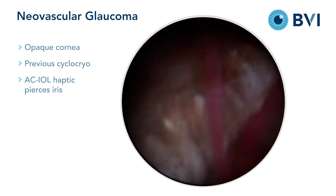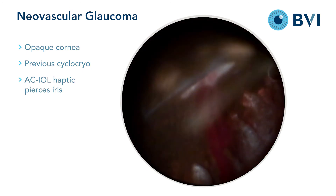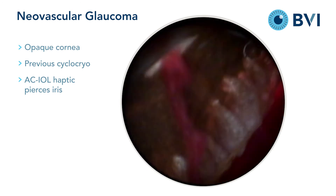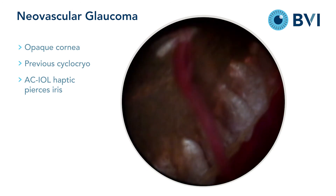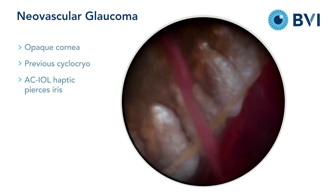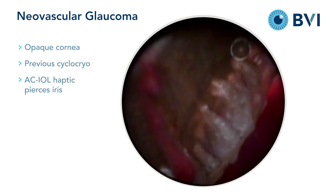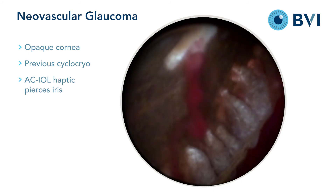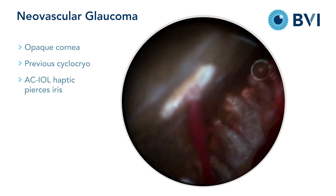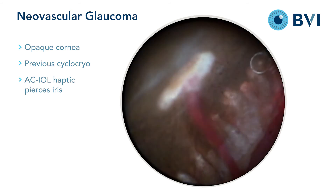There is bleeding from a sclerotomy site that is quite active. This is treated by raising the intraocular pressure with infusion.